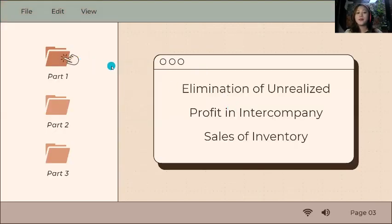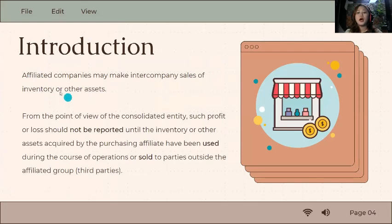To start Part 1 of Elimination of Unrealized Profit in Inter-Company Sales of Inventory, we'll tackle what is this unrealized profit we're talking about. Usually the parent and subsidiary sell to each other. So let's say the parent is selling inventory or something to the subsidiary.